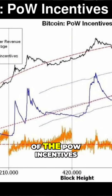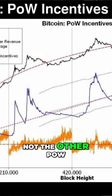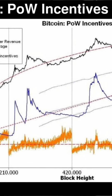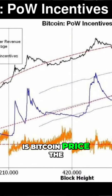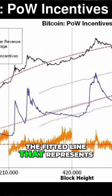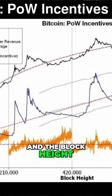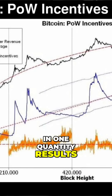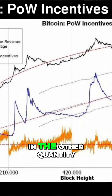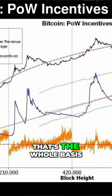Here's a breakdown of the POW incentives — not the other POW, but proof of work. The black line is Bitcoin price. The power law fit is the fitted line that represents a power law relationship between the price of Bitcoin and the block height. Power law suggests that a relative change in one quantity results in a proportional relative change in the other quantity, regardless of the initial size of those quantities. That's the whole basis of that.